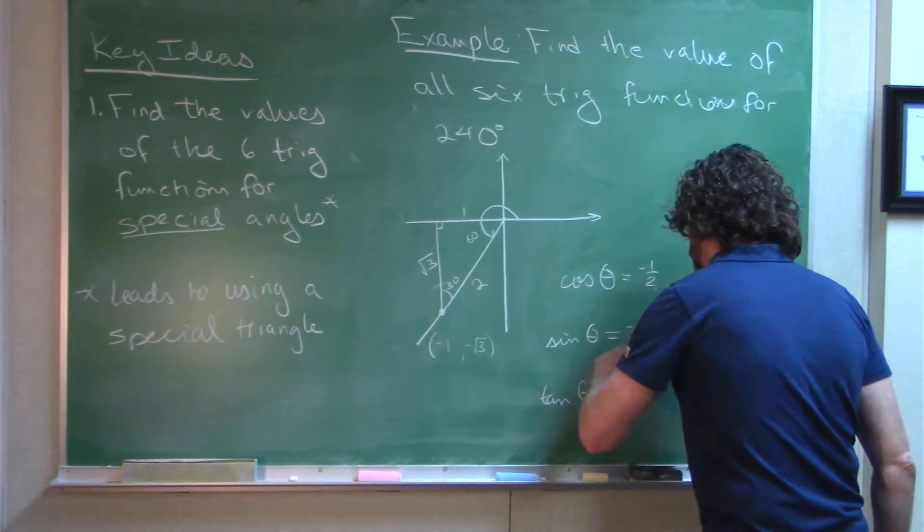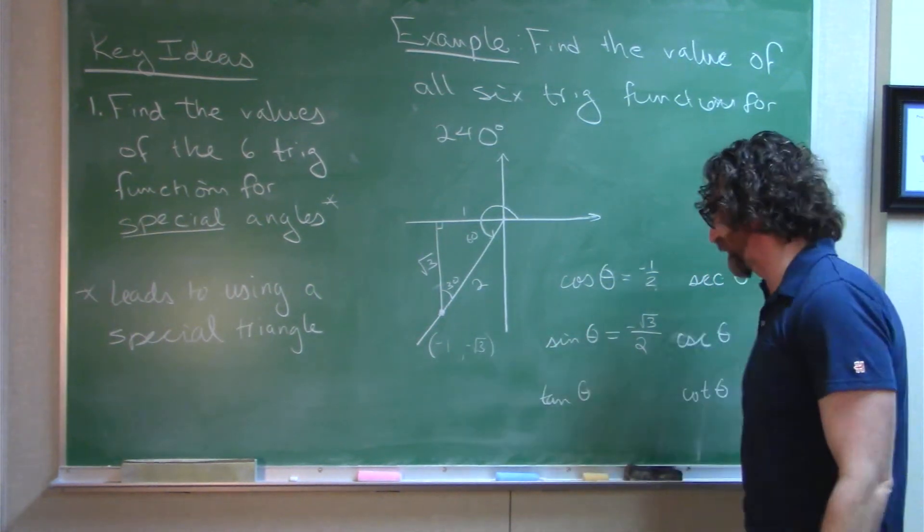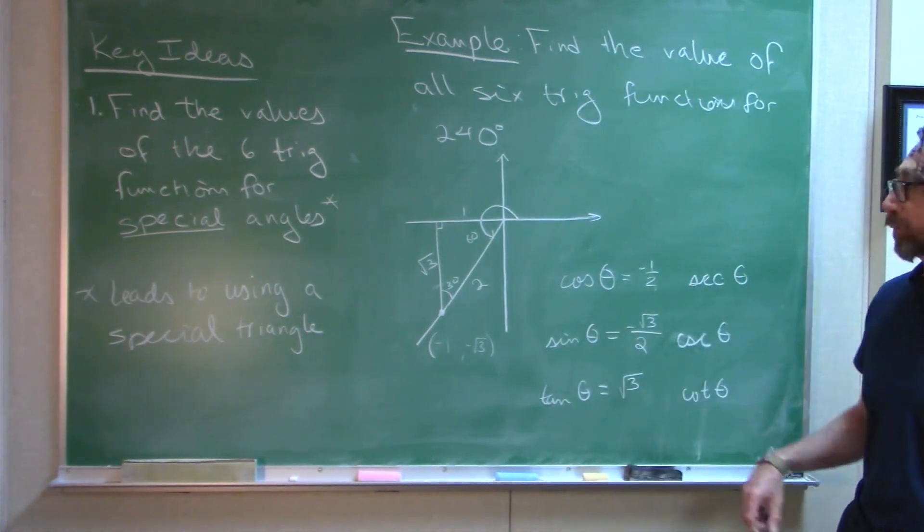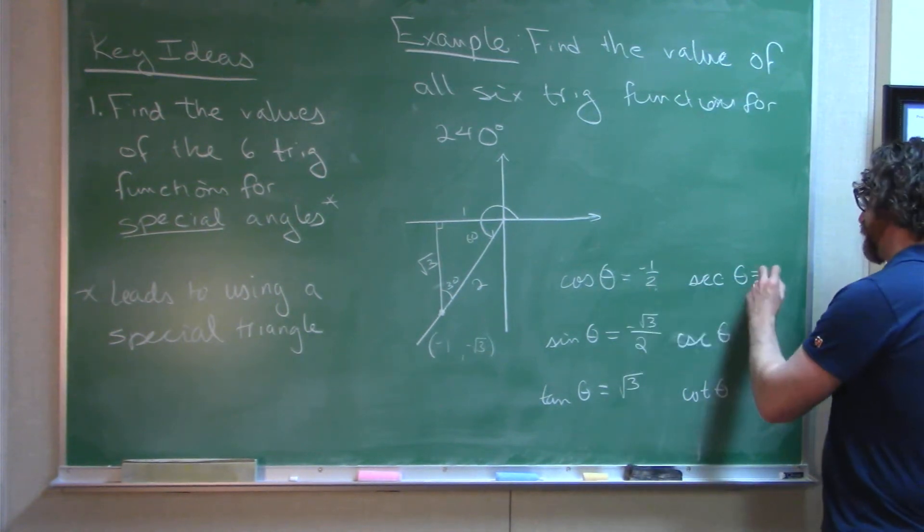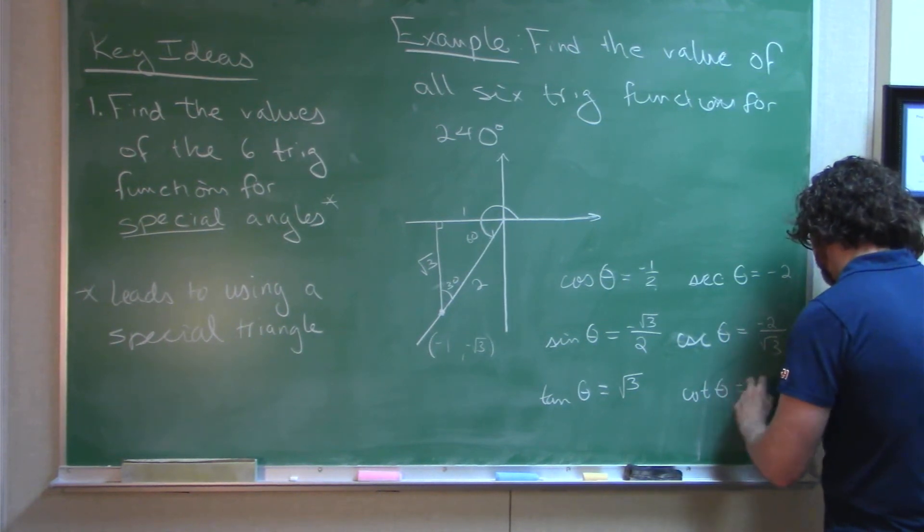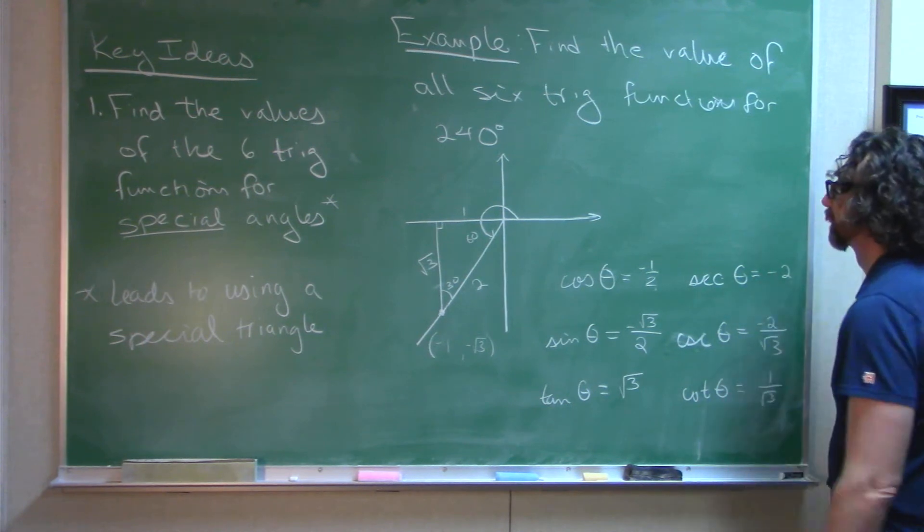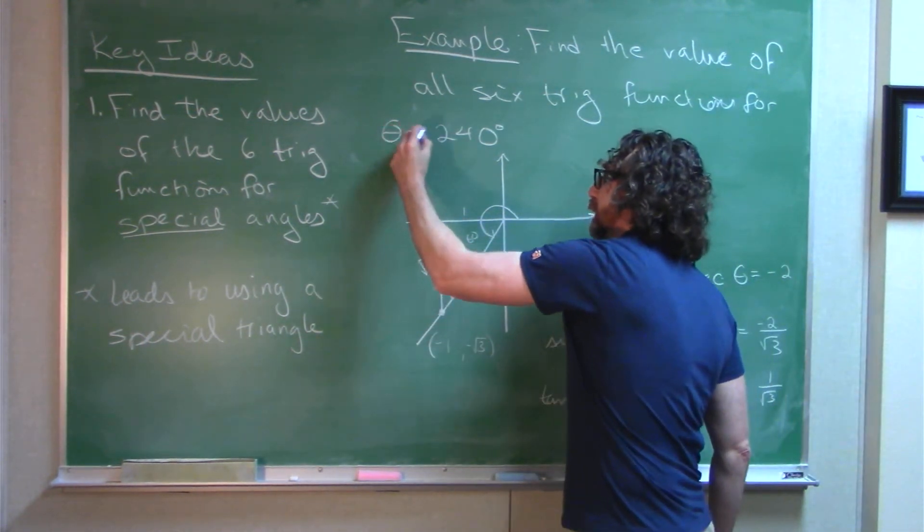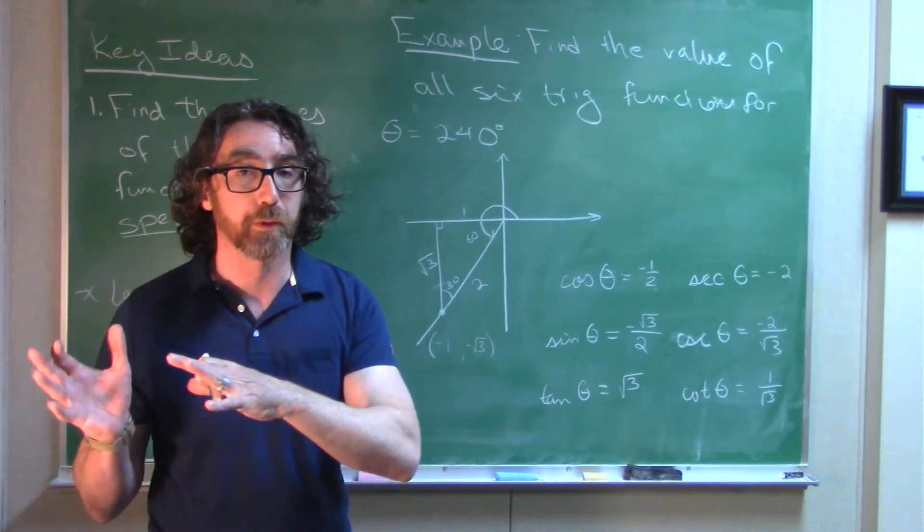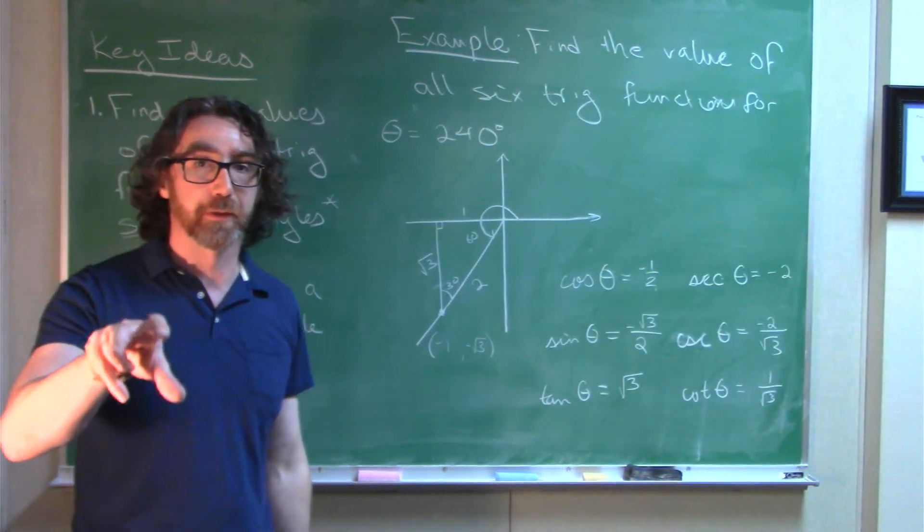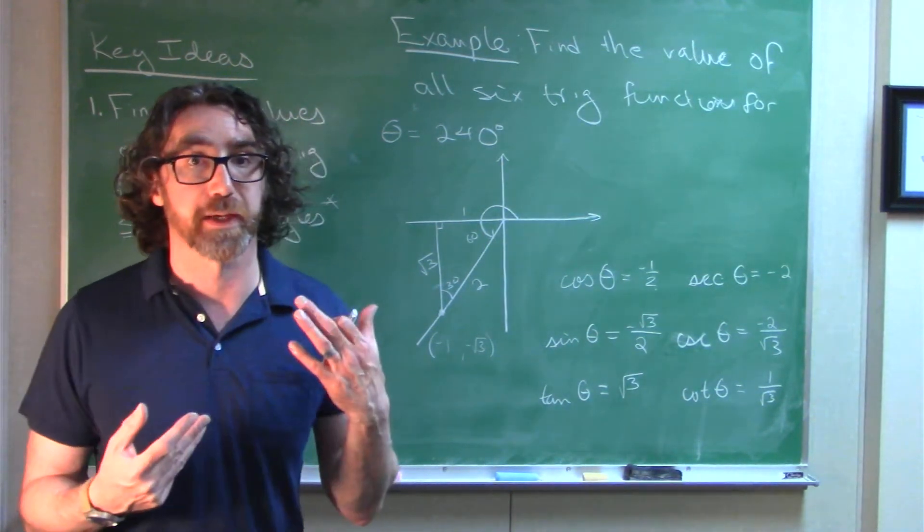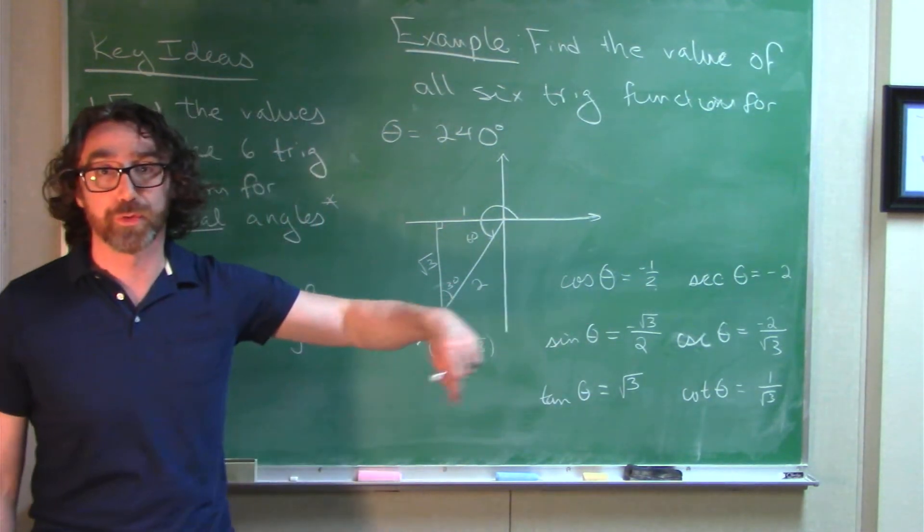Tan theta, y over x. The two negatives cancel out, and if I have a 1 in the denominator, I don't really need to write that. Once you've got each of these, you get these other ones for free. And this is for theta equals 240 degrees. So, if you compare what we did in the last video to this video, in the last video we were given the coordinates of a point on the terminal side. What we had to do was find r using the Pythagorean theorem.